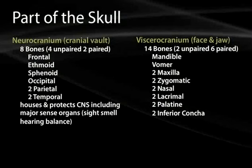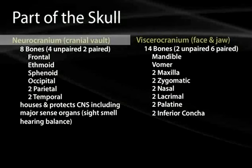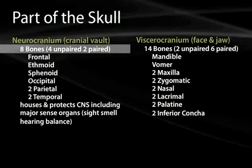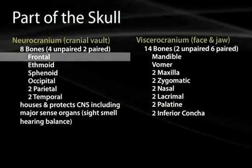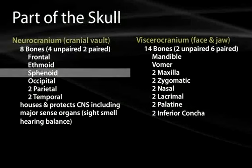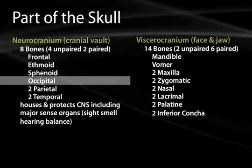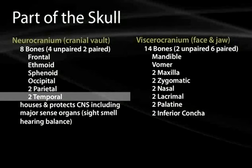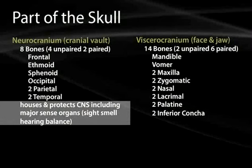Let's look further at some of the parts of the skull. We have the neurocranium, which we've discussed already. There are eight bones in the neurocranium — four are unpaired and two are paired. The frontal, ethmoid, sphenoid, and occipital bones are unpaired, and there are two parietal and two temporal bones. The neurocranium is the component that houses the brain.